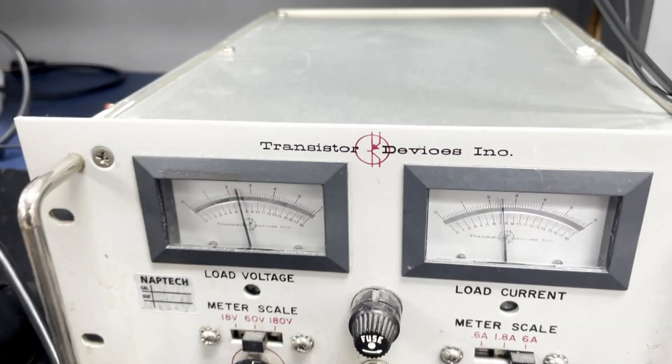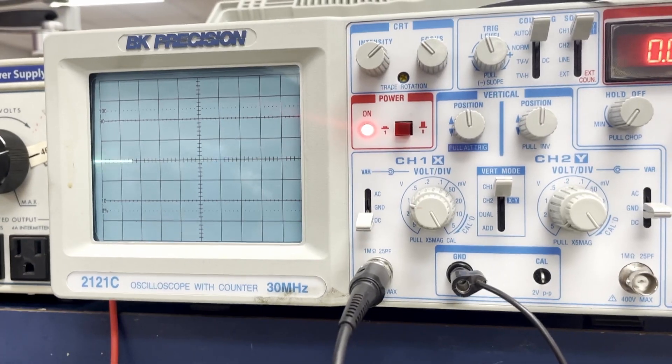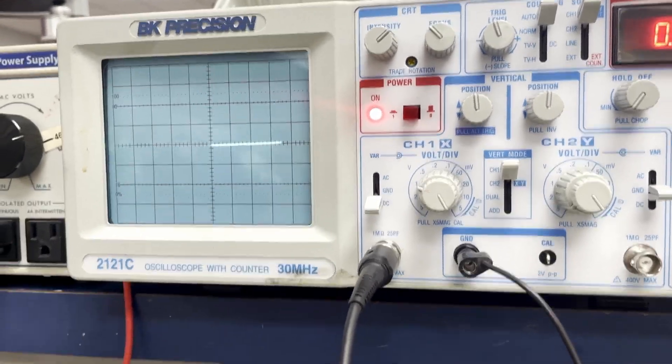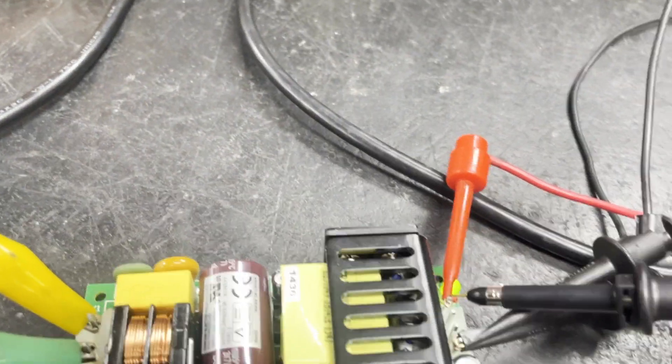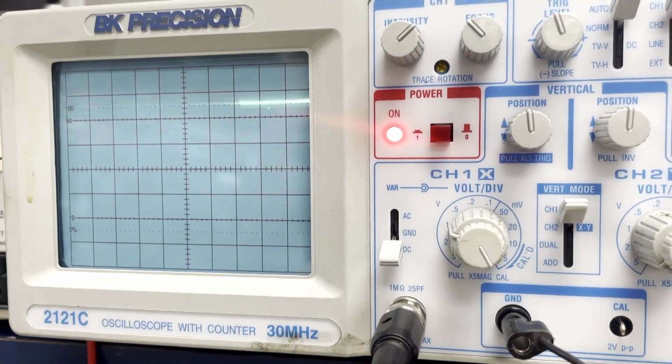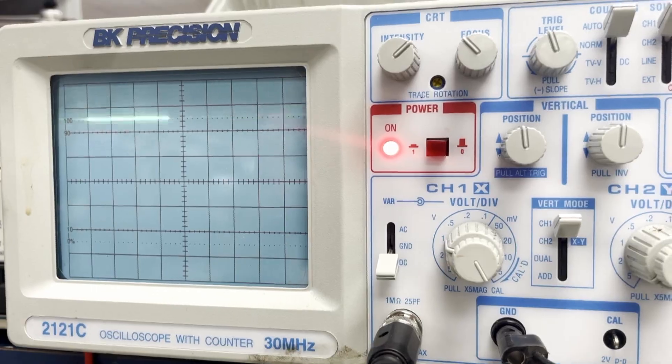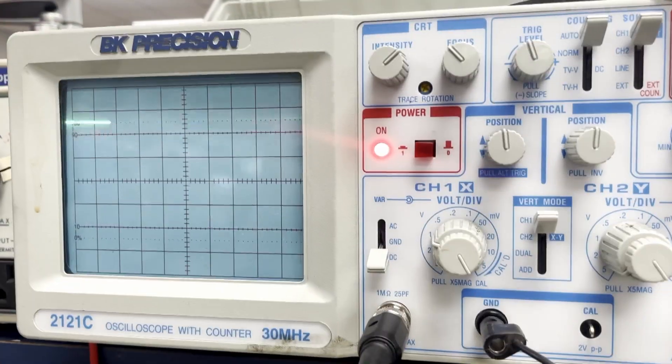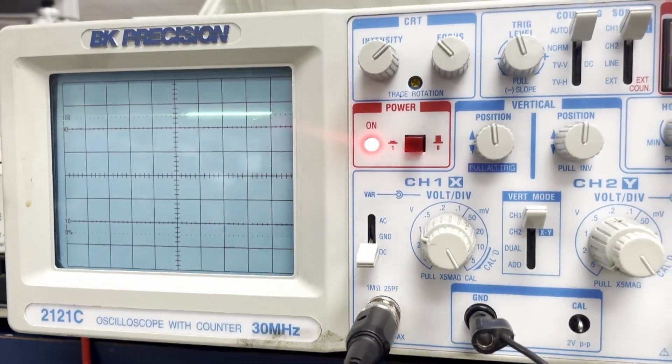So now we will test with the oscilloscope to ensure that we have no ripple or AC wave present. And there we have our 24 volt scale on the oscilloscope. And our DC waveform looks good.